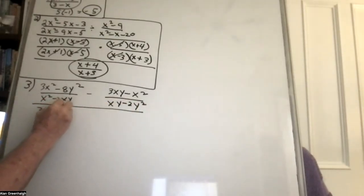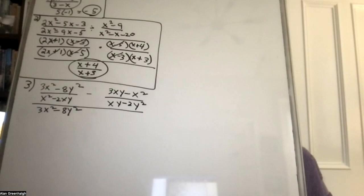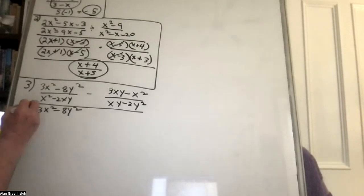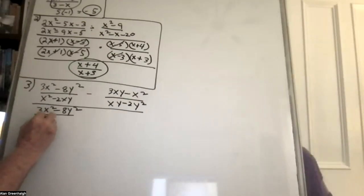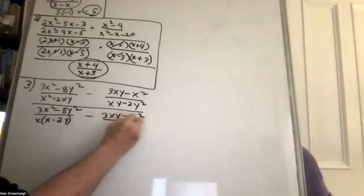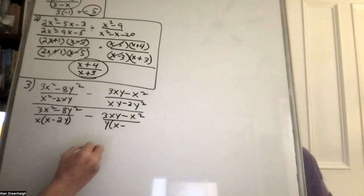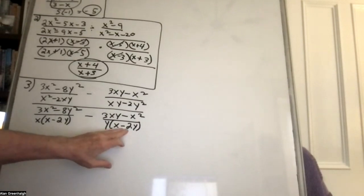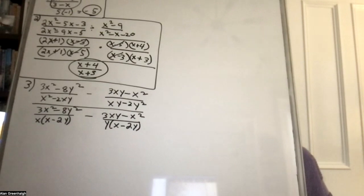So 3x squared minus 8y squared. I have x times x minus y, and then minus 3xy minus x squared. Here you take out the y and have x minus 2y. So you can see that this is the same as that. There was no actual switching around of signs — this was just finding the least common denominator.